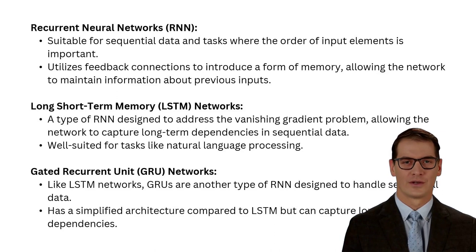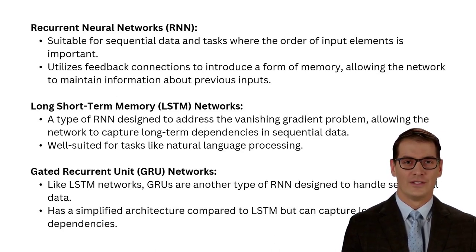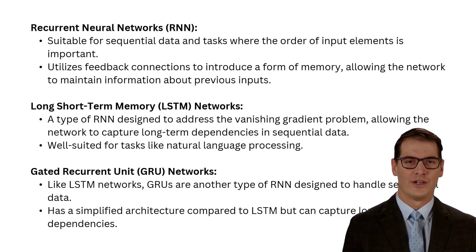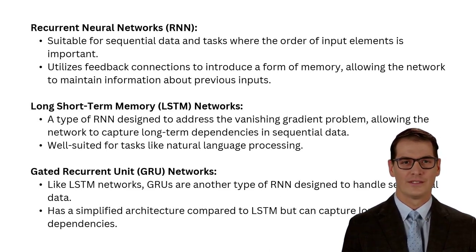Recurrent neural networks (RNNs), long short-term memory (LSTM) networks, and gated recurrent unit (GRU) networks are all types of artificial neural networks which have applications in tasks that require order, such as natural language processing.